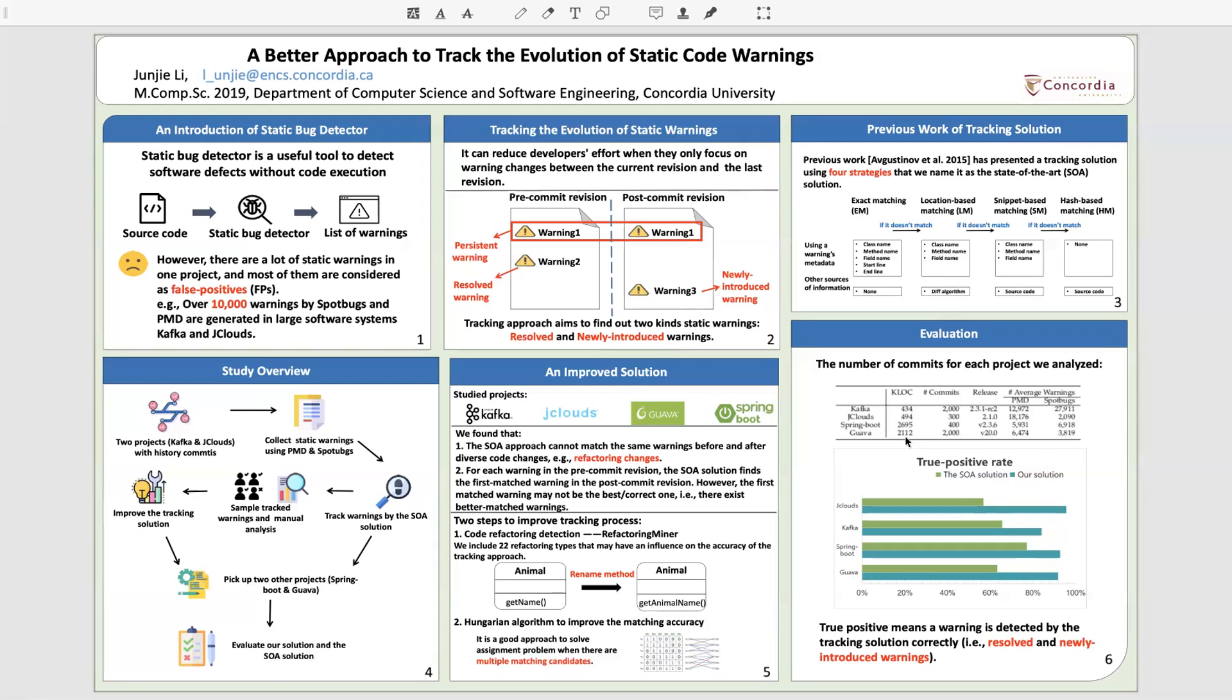We collect static warnings over 300 commits for each project, and the bar chart shows that our improved tracking approach significantly outperforms the state-of-the-art approach.